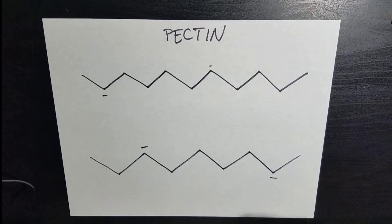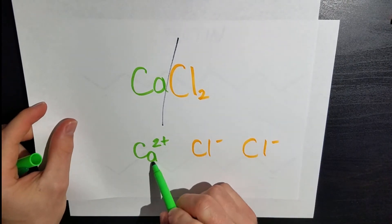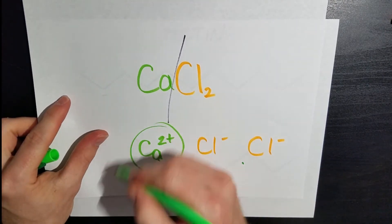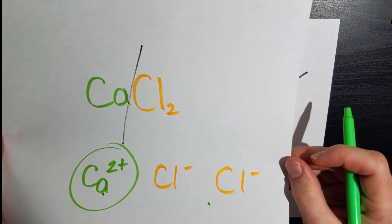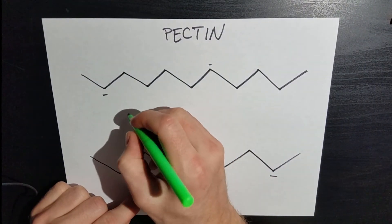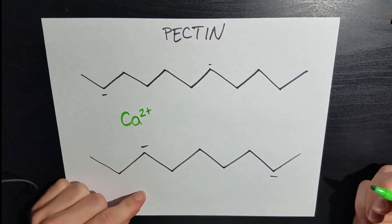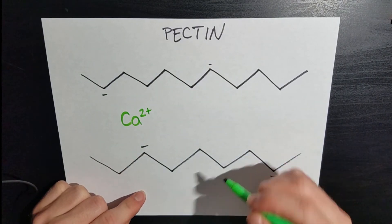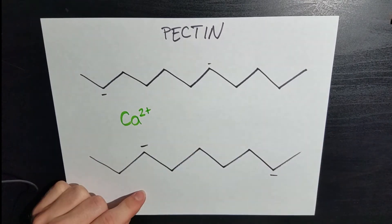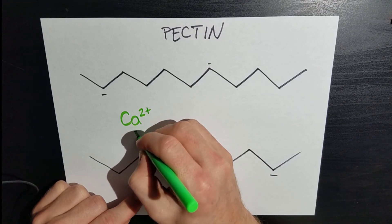So when you bring in calcium chloride into water, remember that is going to split up and it's going to just be a charged particle. So that 2 plus charge, that's what's important here. So if I bring in calcium 2 plus, I have the ability to associate with two negative charges. So we're going to associate with this negative charge right over here on this pectin molecule, and we're also going to associate with that one.